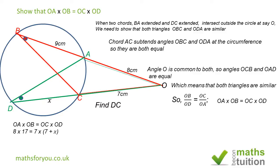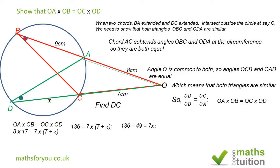So we have 136 equals 7 times (7 plus X), which gives 136 equals 49 plus 7X. Taking 49 across: 87 equals 7X. Dividing 87 by 7, we get X is equal to 12.4 centimeters.